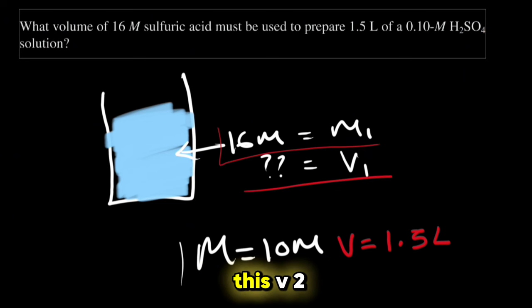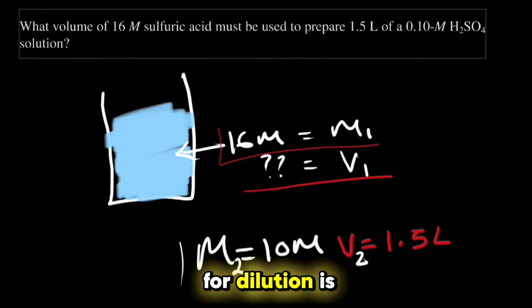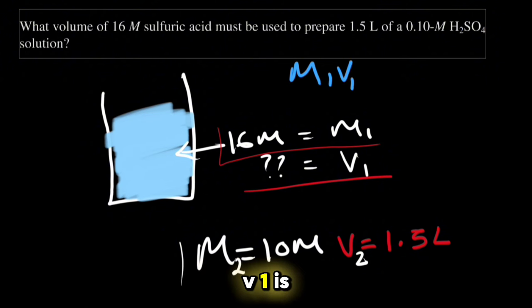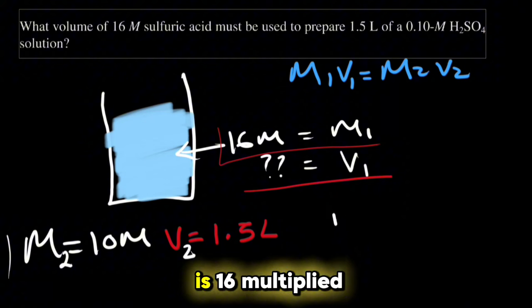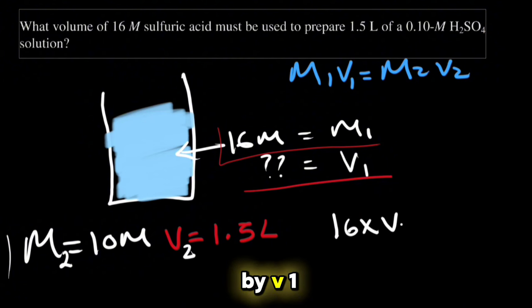Now the formula for dilution is M1V1 equals M2V2. So we will just substitute the values: M1, which is 16, multiplied by V1, which we are looking for, is equal to M2, which is 10, multiplied by V2, which is 1.5 liters.